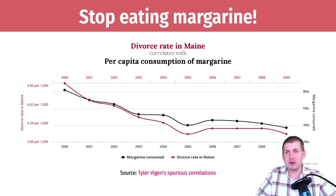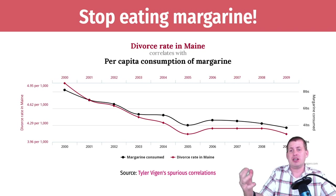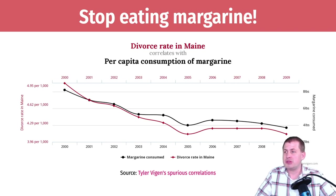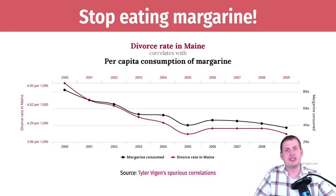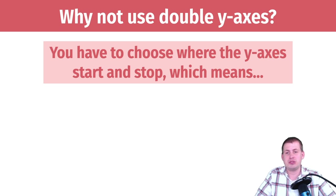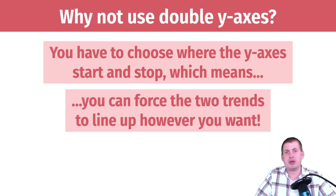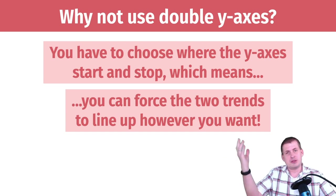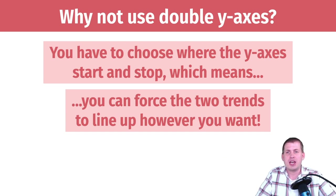This is super common, but the issue with dual y-axis is it gives you way too much decision-making power as the data visualizer, which can make you tell incorrect stories. You get to choose where the y-axis starts and stops, and because you have that power you can force the two trends to line up however you want — you can force there to be a story even if there isn't one.